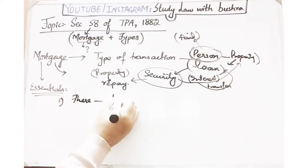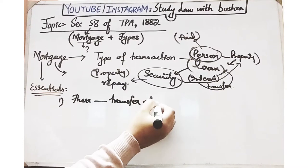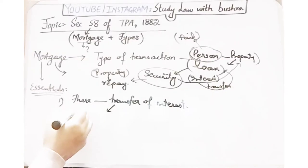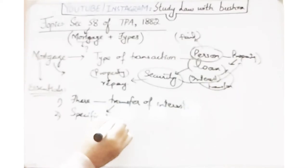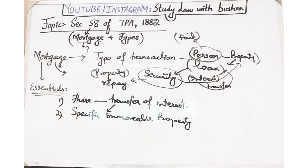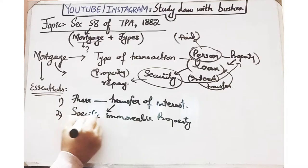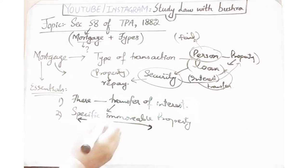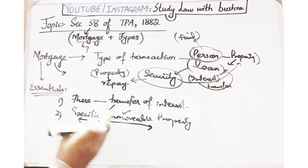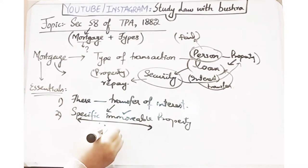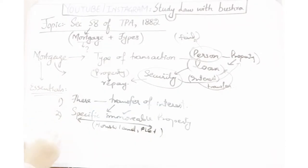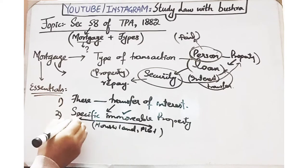Agar hum is mortgage ke essentials nikalein to sabse pahli baat yeh hai ke there must be a transfer of interest — ek bhanda apni property ke andar jo uska interest hai woh kisi dusare bhande ko transfer kare. Joh property ki hum baat kar rahe hain us mein interest in specific immovable property batani hogi. Aap ne specify karna hai ke aap apni koun si property — ghar, land, ya plot — dusare bhande ko transfer kar rahe ho.